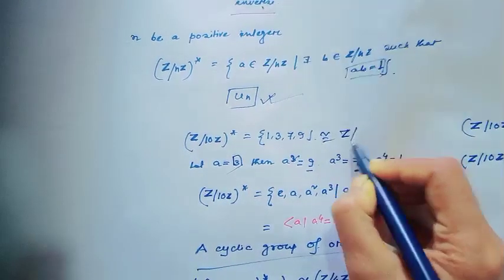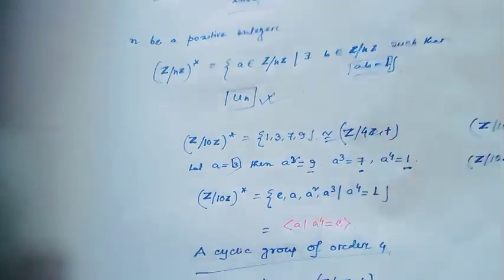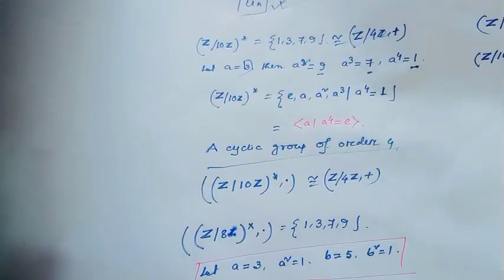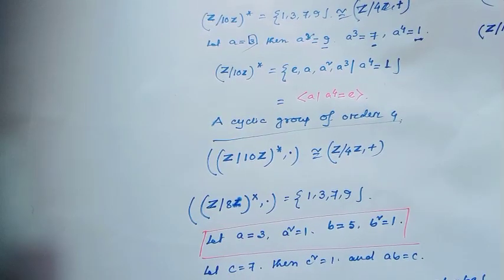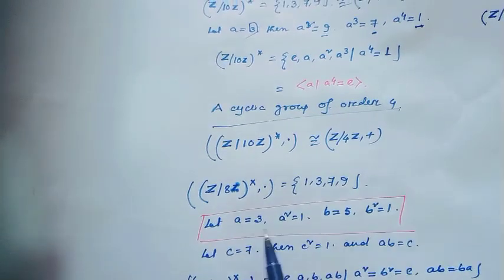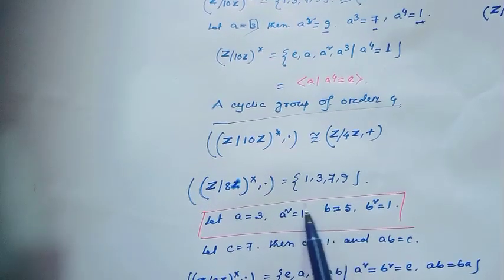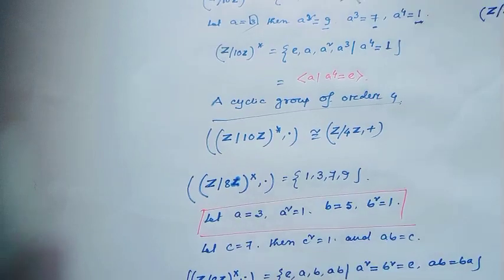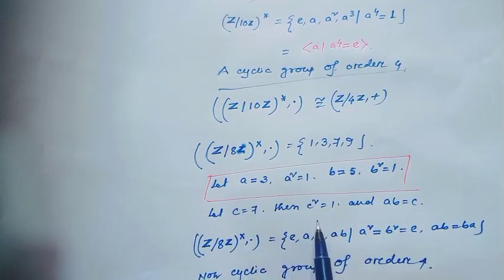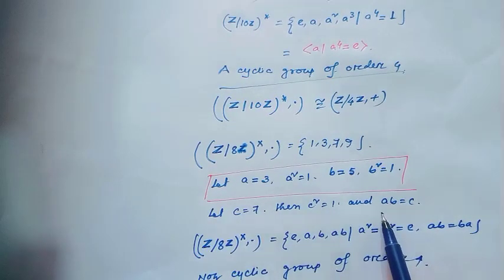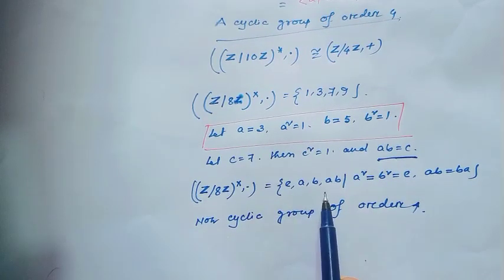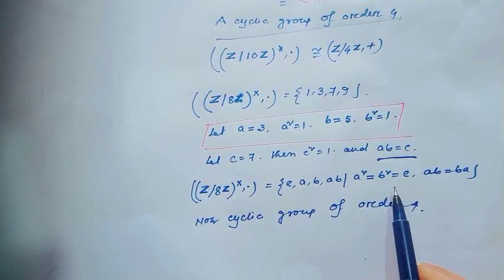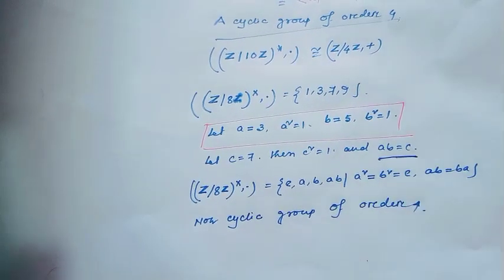If we consider Z mod 8Z star, the multiplicative inverses are {1, 3, 5, 7}. Let a equal 3, then a squared equals 1. Let b equal 5, then b squared equals 1. Let c equal 7, and a times b equals c. Then Z mod 8Z star under multiplication contains the set {e, a, b, ab} such that a² equals b² equals identity and ab equals ba.